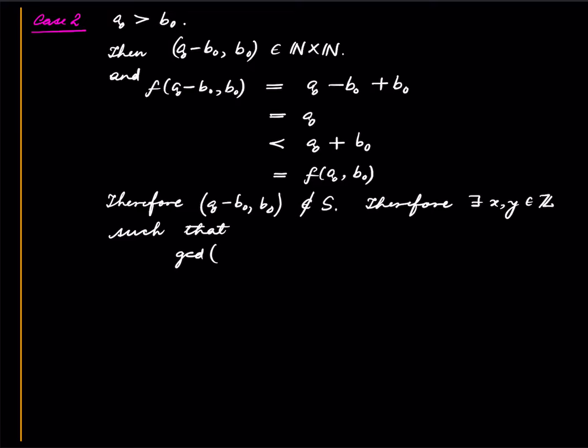So therefore by definition of S, there exist integers X and Y such that GCD of A0 minus B0 comma B0 equals A0 minus B0 times X plus B0 Y. But now we use that fact that this GCD is same as GCD A0 comma B0.